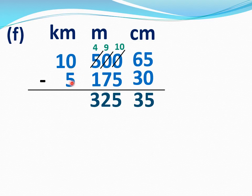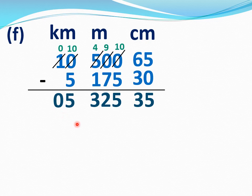This 0 is smaller than 5, so we will borrow from the next number. This 1 will become 0 and this 0 will become 10. 10 minus 5 is 5. 0 as it is. Answer is 5 kilometers 325 meters 35 centimeters.